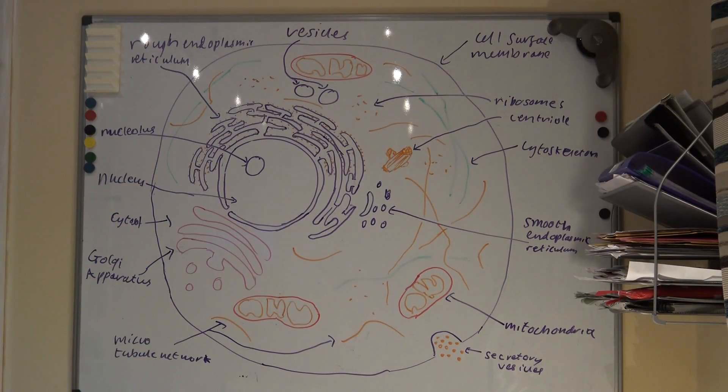Now I've described the organelles of the cell used in protein production, I can now outline protein production itself. Make sure you listen out for the organelles you've already heard. First, proteins are synthesized on ribosomes on the rough endoplasmic reticulum. They then pass into the cisternae and are packaged into transport vesicles. These vesicles then move towards the Golgi apparatus via the transport function of the cytoskeleton.